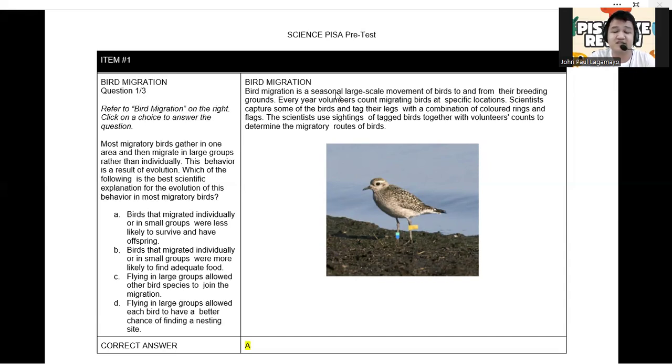So this is the illustration as presented. Let us try to refer to the question. Most migratory birds gather in one area and then migrate in large groups rather than individually. This behavior is a result of evolution. Which of the following is the best scientific explanation for the evolution of this behavior in most migratory birds? The best possible answer here is, of course, letter A.